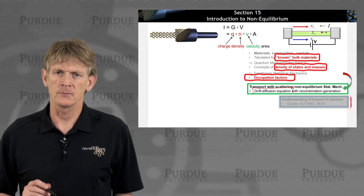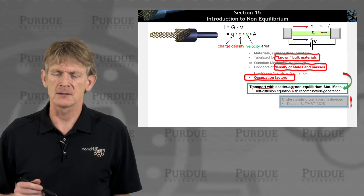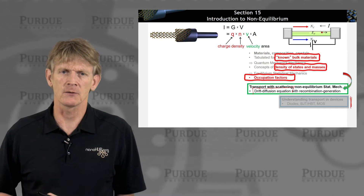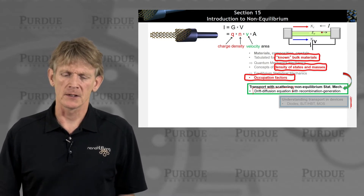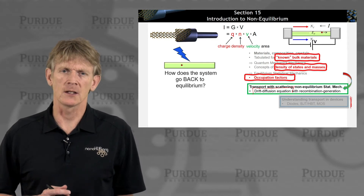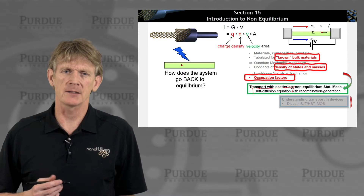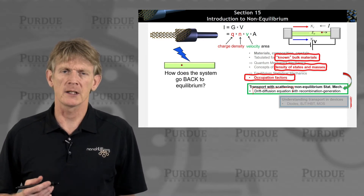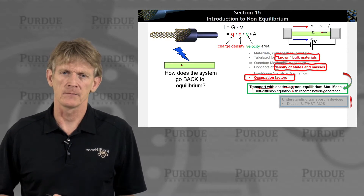We need to get there from what we learned about bulk materials — density of states and masses, and the occupation factors. All these things we've done in the previous section; we now want to get to transport. But there's one thing we still need to address: how does a system get back to equilibrium once you kick it out of equilibrium? What are the relaxation methods or processes in a semiconductor?